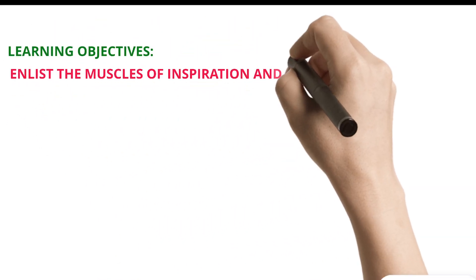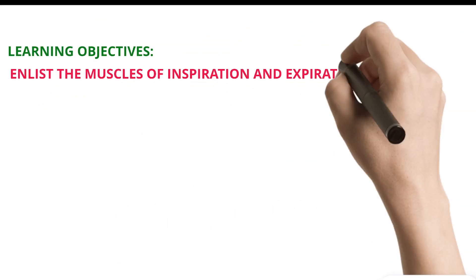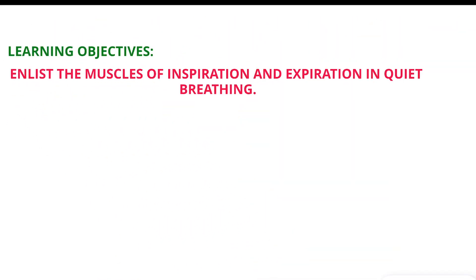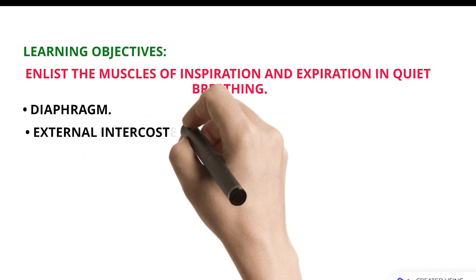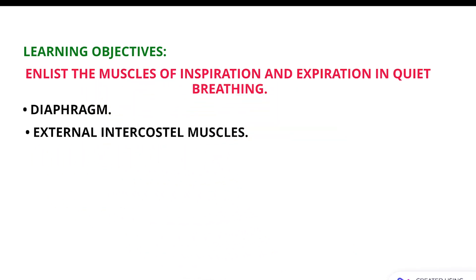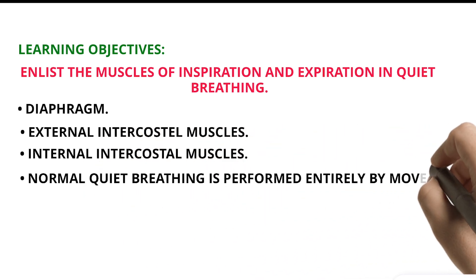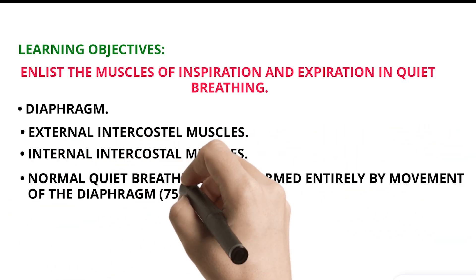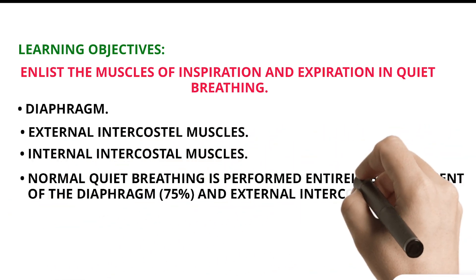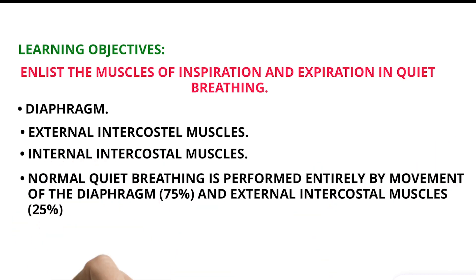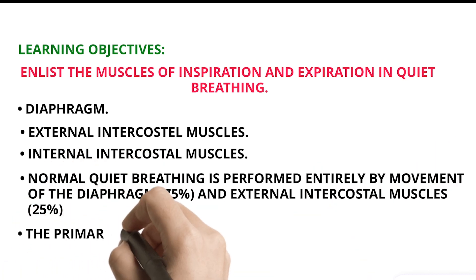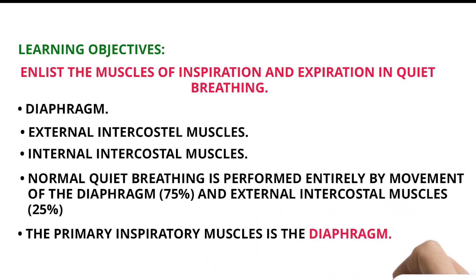Learning Objective: Enlist the muscles of inspiration and expiration in quiet breathing. The muscles are the diaphragm, external intercostal muscles, and internal intercostal muscles. Normal quiet breathing is performed entirely by movement of the diaphragm (75%) and external intercostal muscles (25%). The primary inspiratory muscle is the diaphragm.